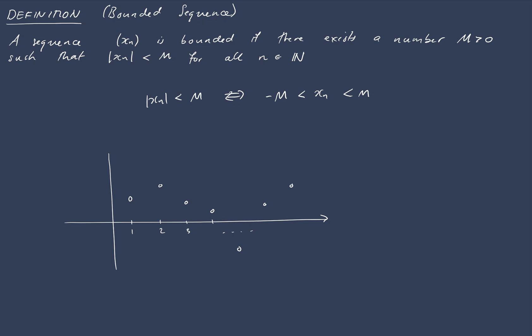Now the definition says that our sequence is bounded if we can find a number m such that our value, the items in the sequence, or the terms in the sequence are between negative m and m. So we could draw that on our picture as just being, for example, here.